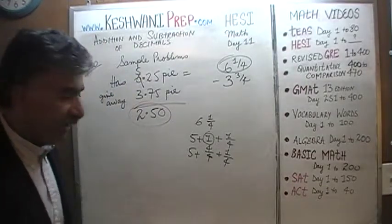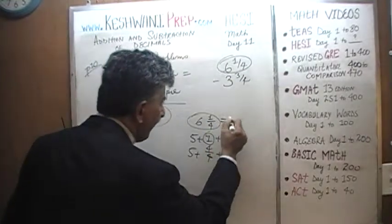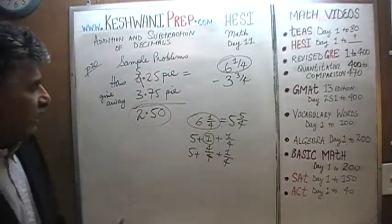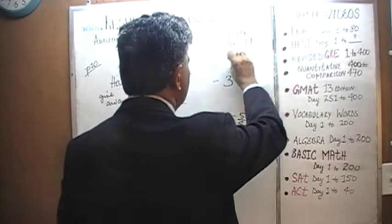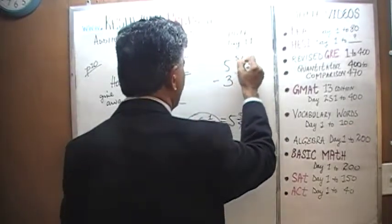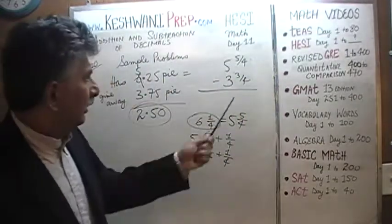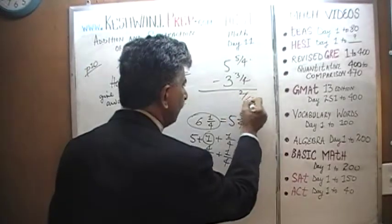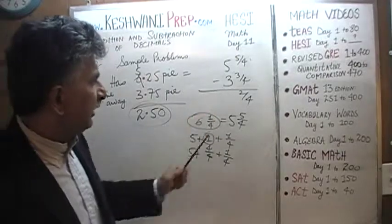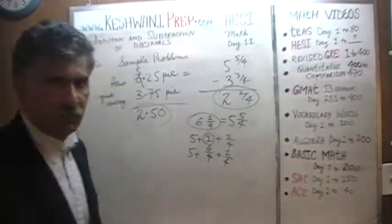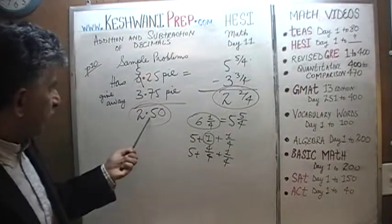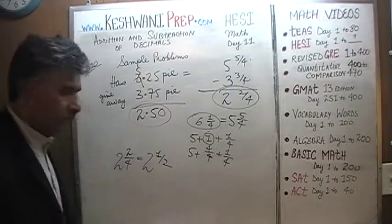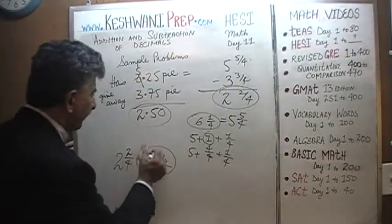Now we have 4 quarters and 1 quarter. That's 5 quarters. So 6 and 1 quarter can be written as 5 and 5 quarters. And now the rest is very simple. If you have 5 quarters and you take away 3 quarters, you are left with 2 quarters. That's the answer: 2 and 2 quarters. Well, 2 quarters is half, which is exactly what we have here. 2 and 2 quarters is the same as 2 and a half. 2.5.